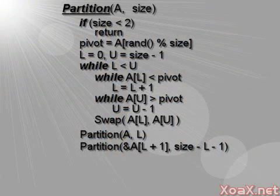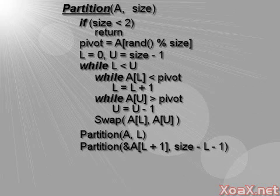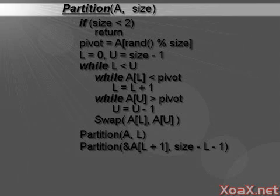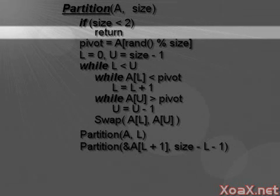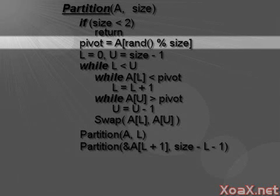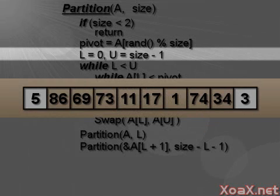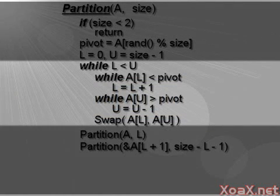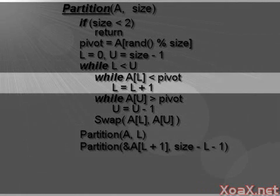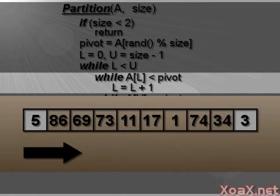Here's the pseudocode for QuickSort. We have a function called partition, which takes the array to be sorted and its size as arguments. If the array has less than 2 elements, it is already sorted, so we just return. Otherwise, we randomly select the pivot element from the array. Then we set a lower and upper index to the least and greatest indices in the array. Next, we have a while loop that runs until the upper and lower indices are equal. Inside this while loop, the lower index skips over elements that are smaller than the pivot, and the upper index skips over elements that are larger than the pivot.